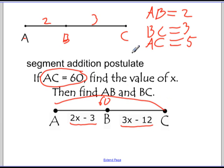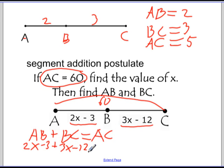Well, what I know from the segment addition postulate is that the measure of AB, you can even write this equation out like this first, some people like to do this to organize their thinking, plus the measure of segment BC, those 2 added together, is going to be equal to the measure of segment AC. So what that means is AB, which is 2x minus 3, plus BC, which is 3x minus 12, must be equal to 60.